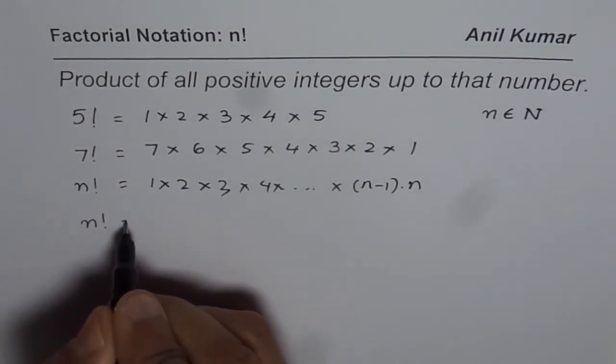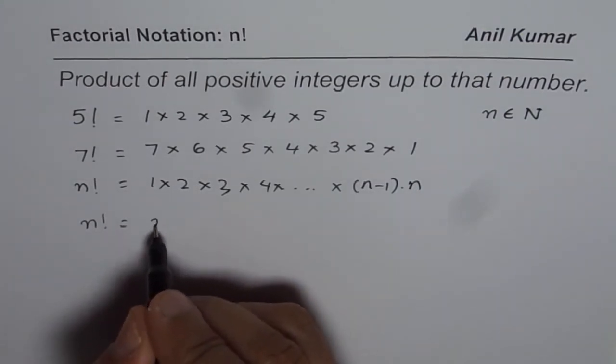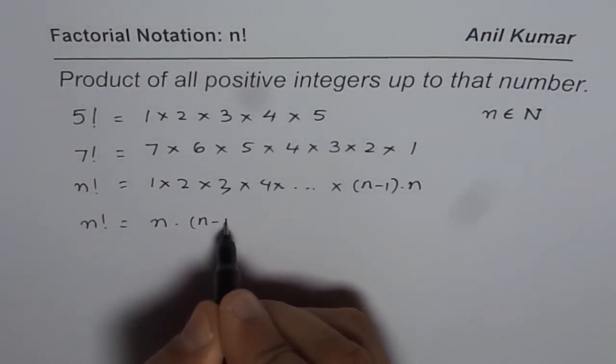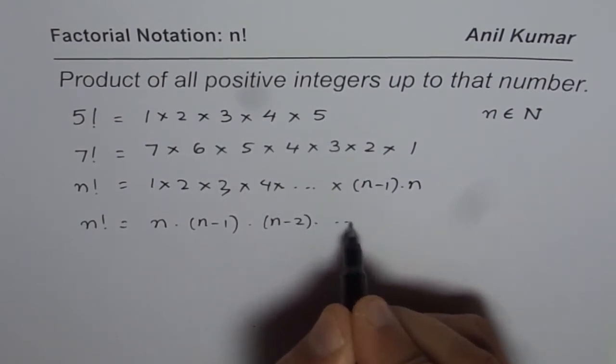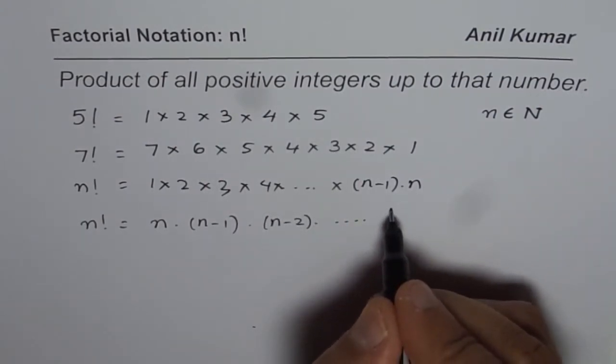rewrite n factorial as n times n minus 1 times n minus 2 times and so on till 1.